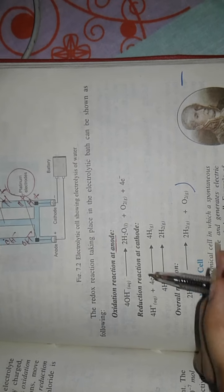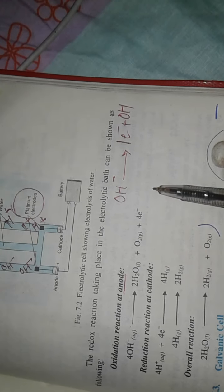Oxidation means loss of electron. If I take OH negative, it has to remove one electron. It will produce OH radical.